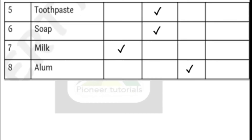Question number 5 — toothpaste. Toothpaste is basic. Question number 6 — soap. Soap is basic. Question number 7 — milk. Milk is acidic. Now, why acidic? Because it contains lactic acid. And question number 8 — alum. Alum is salt.